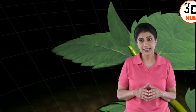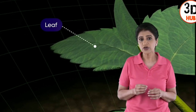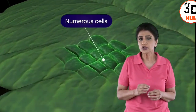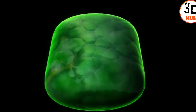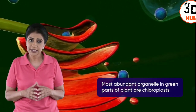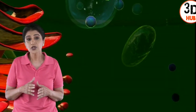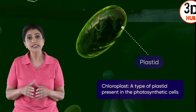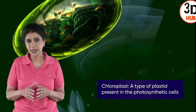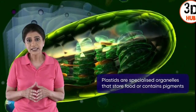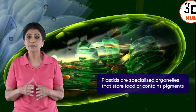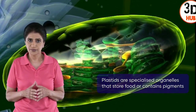Plants are green in color due to the presence of green pigments in their cells. A leaf is composed of numerous cells, each containing various organelles suspended in its cytoplasm. One of the most abundant organelles in a plant cell is the chloroplast, a type of plastid present in photosynthetic cells of plants. Plastids are specialized organelles that contain pigments or food.